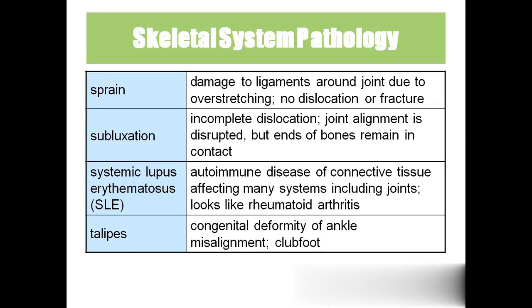Subluxation is an incomplete dislocation — only half the bone comes out of the joint, while the other half remains. In full dislocation, the entire bone comes out. SLE — systemic lupus erythematosus — is an autoimmune disease similar to rheumatoid arthritis. Talipes means foot deformity resembling a club foot, shaped like a hockey club.